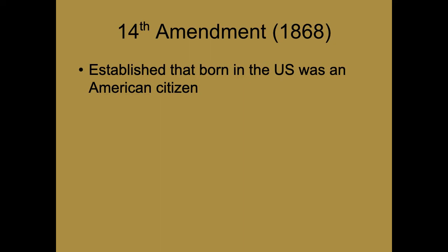This gave citizenship to former slaves, but it still applies today. If someone comes to the United States illegally and then has a child, that child is automatically an American citizen. Some people say that doesn't make sense — if their parent was here illegally, why would their child be a citizen? Well, because of the 14th Amendment. We would have to pass a new constitutional amendment to alter that. It still applies to anybody, even though the original intention was for former slaves.